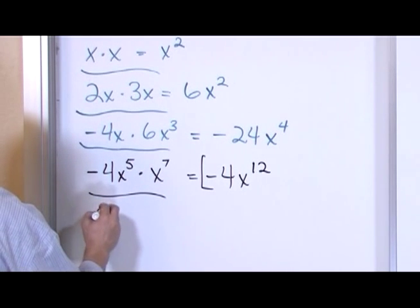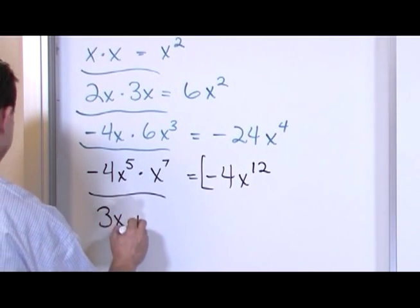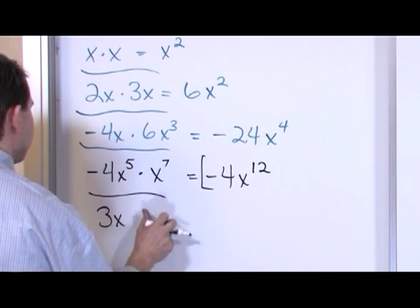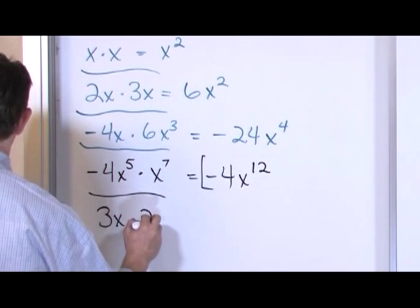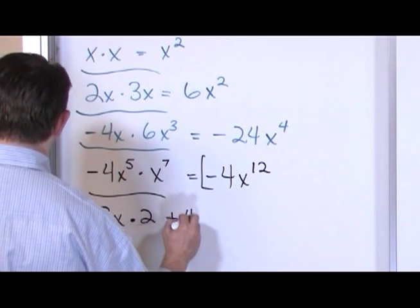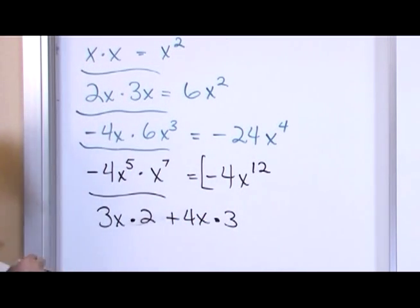What if I had something a little more complicated? 3x plus, actually let's make it 3x times 2 plus 4x times 3. Now you need to go back to your order of operations a little bit.